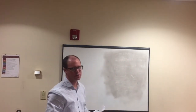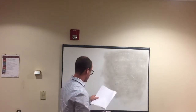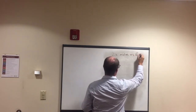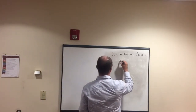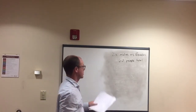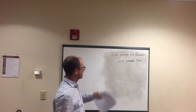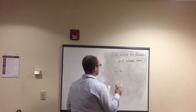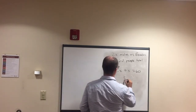Here's another proportion question. There are twice as many males as females in a class of 60 people total. We represent males as 2x because they're twice as many as females, and females as just x. So 2x plus x equals 60, which gives us 3x equals 60.